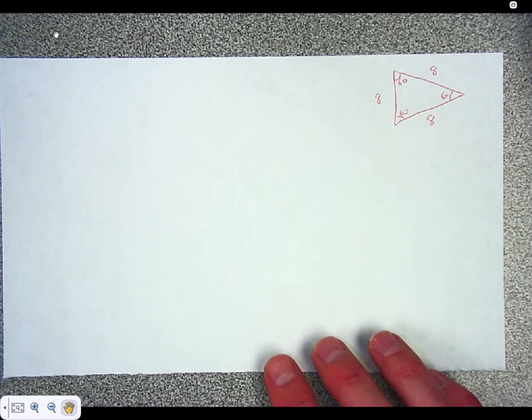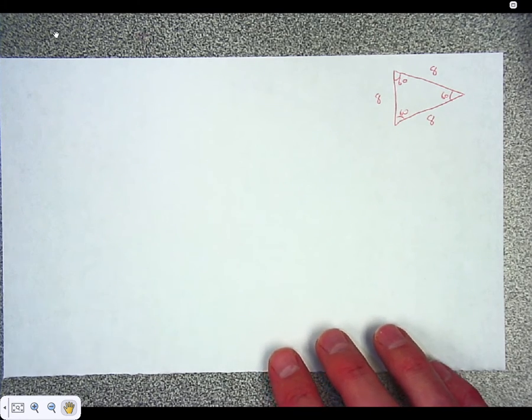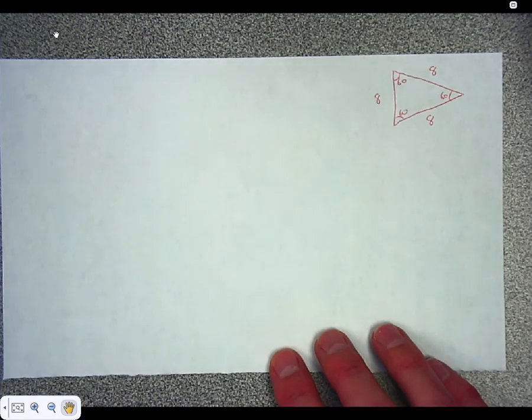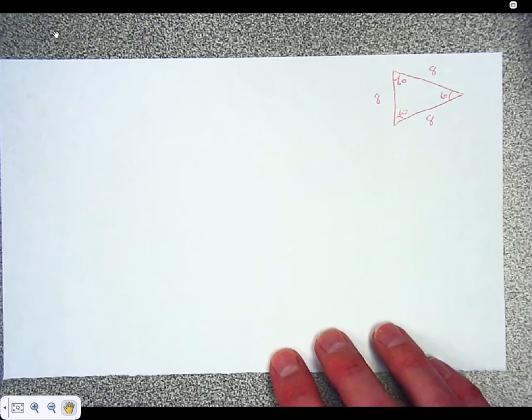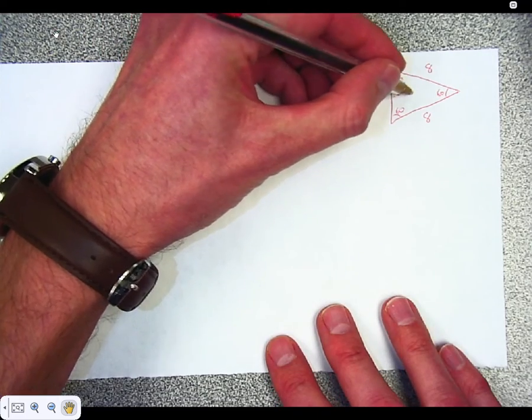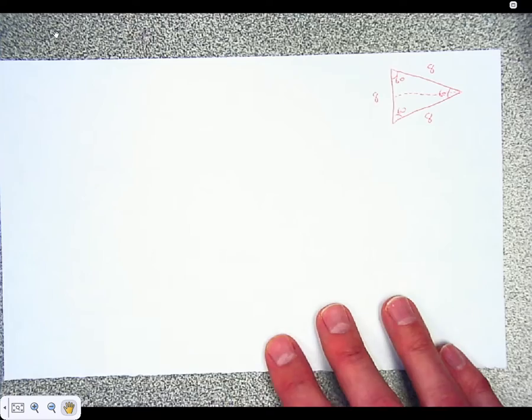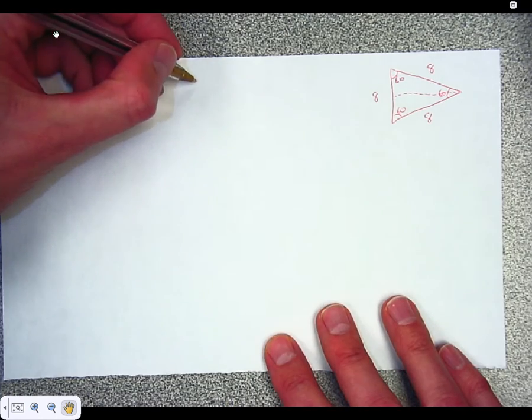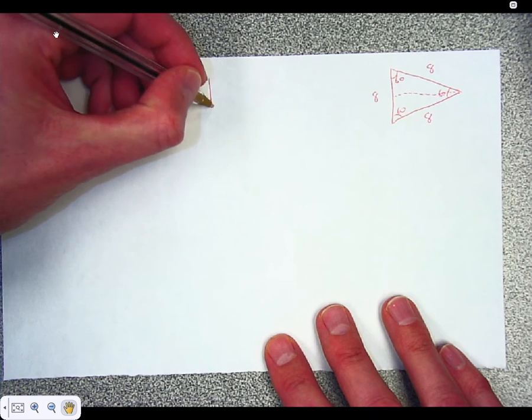And in an equilateral triangle, all the sides are the exact same. It happens that all the angles are exactly the same as well, 60, 60, 60. And what I'm going to do is I'm going to cut this triangle in half. Again, pretend that's a straight line. When I do that, the new triangle that I have created looks something like this.